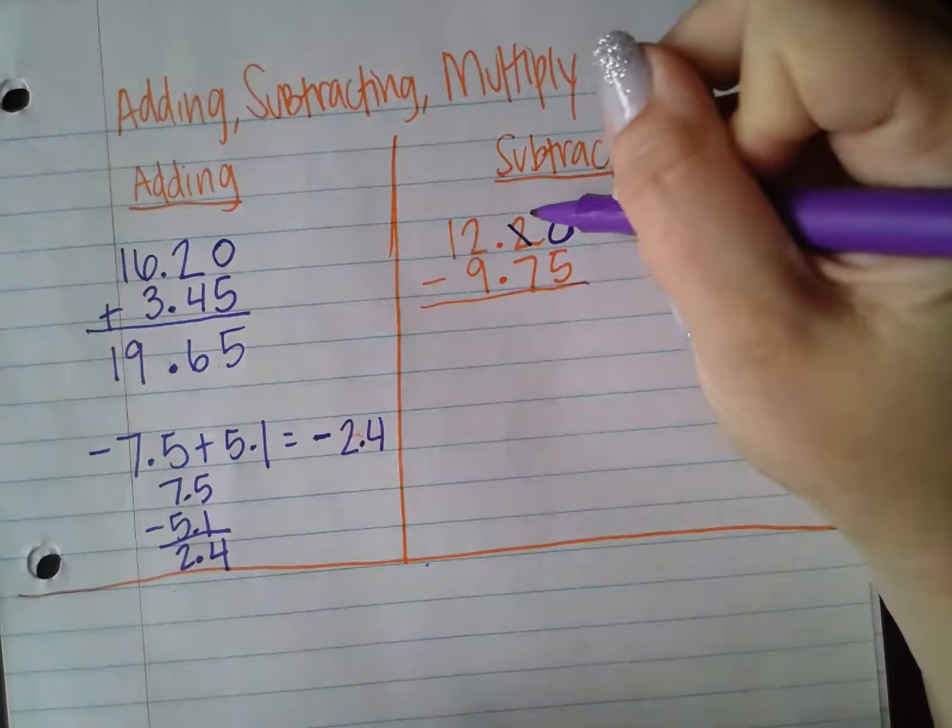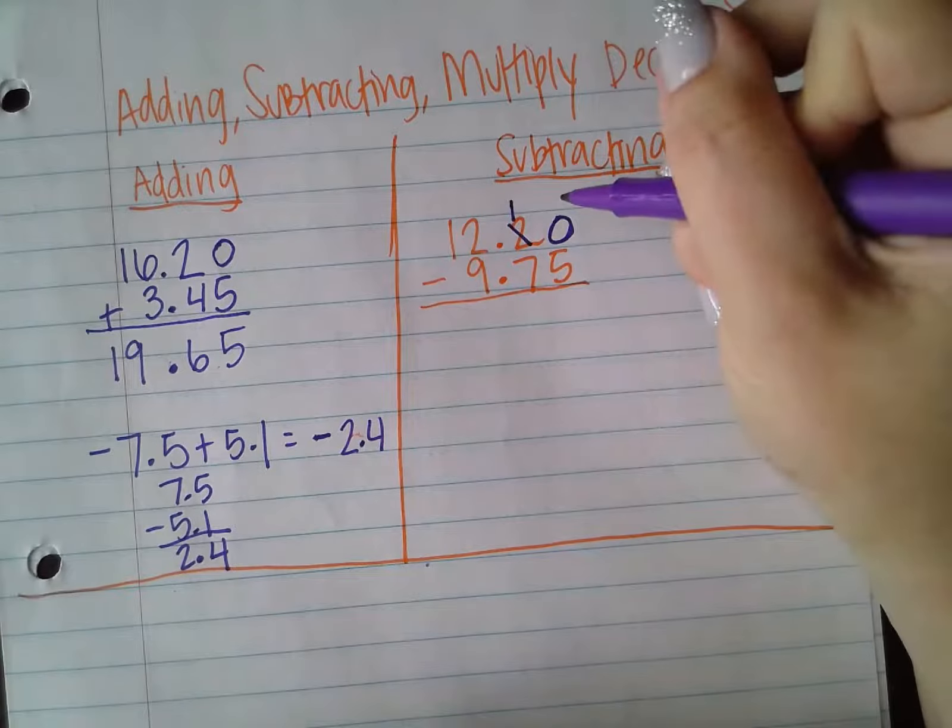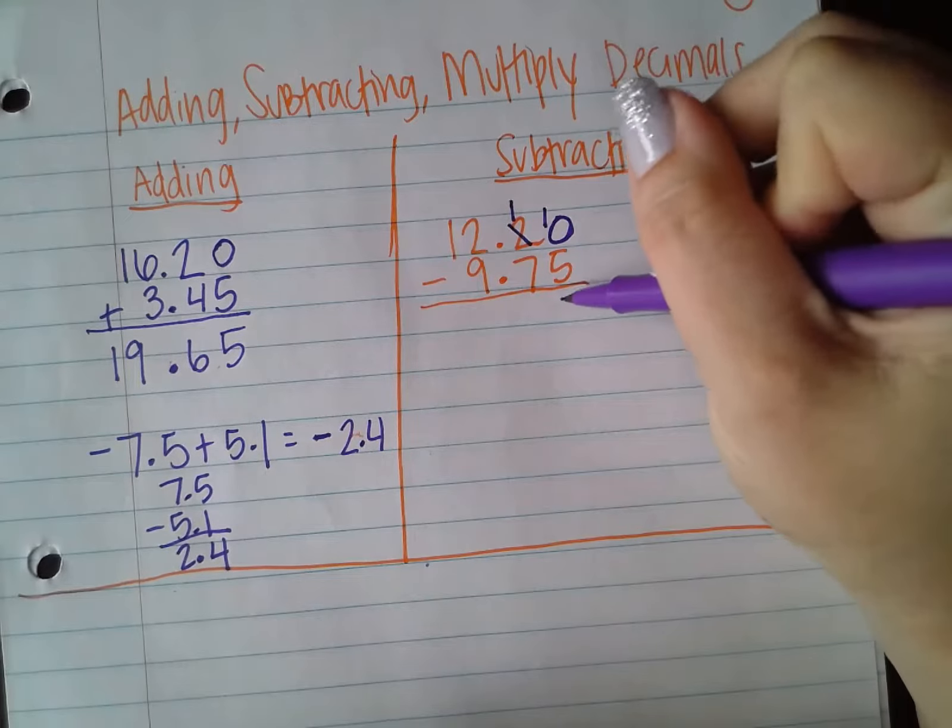So we're going to borrow from the 2. So this becomes a 1. This now becomes a 10. 10 minus 5 is 5.